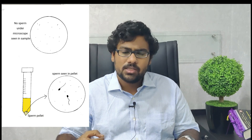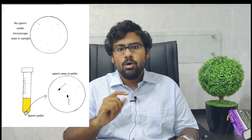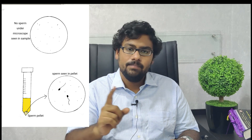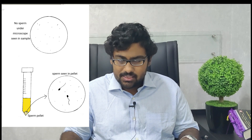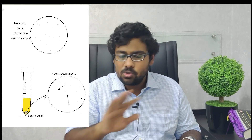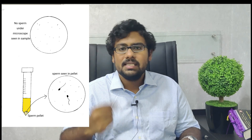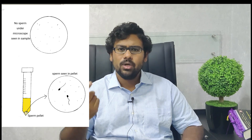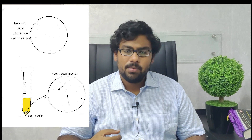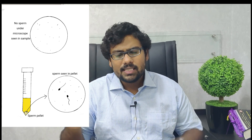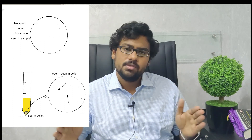There is also a condition called cryptozoospermia. In cryptozoospermic patients, the raw semen sample under the microscope shows no sperms, but when the sample is centrifuged, one or two sperms may be seen in the pellet. This is how we classify individuals with low sperm count — into severe, moderate, mild oligozoospermia, and cryptozoospermia.